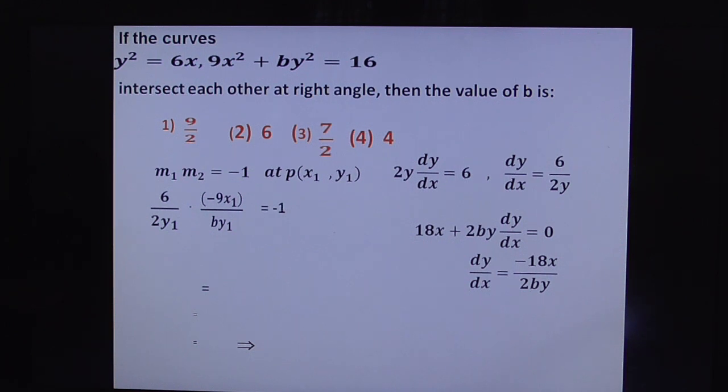Now solve this. Here you can get 6/2 is 3, 3 times -9 gives 27x₁/(by₁²) = 1 after cancellation. By cross multiplication, you get 27x₁ = by₁². Substitute this value in curve 1.